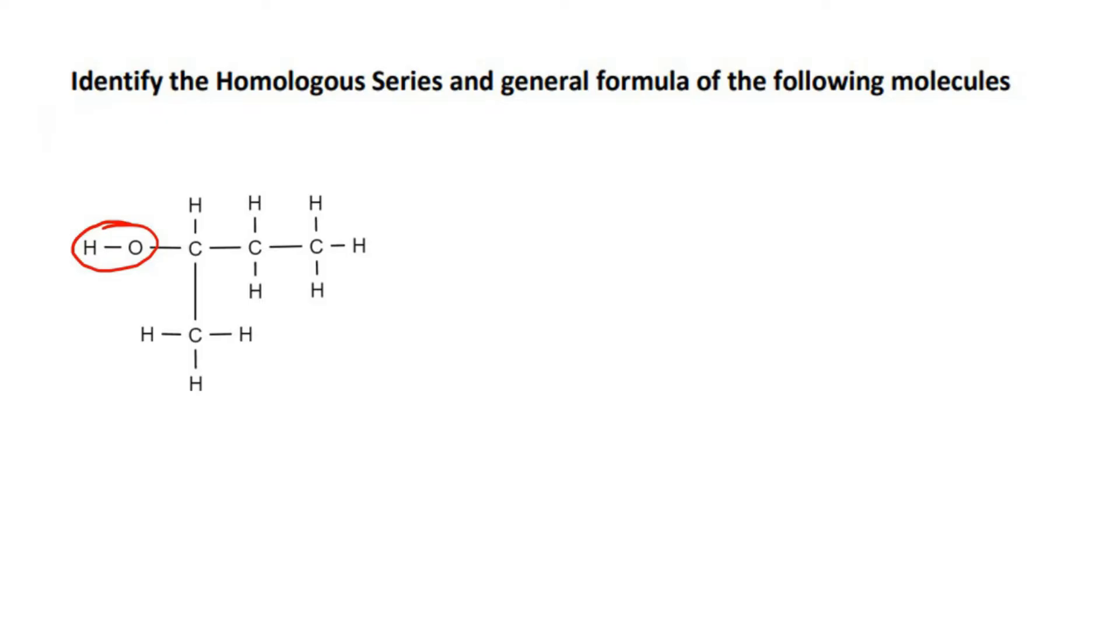Now, we can see that it only has an OH. It doesn't, for example, have a double bond oxygen connected to an OH. If it was like that, then it would be a carboxylic acid. But because we just have that OH over there, this means that this is an alcohol.